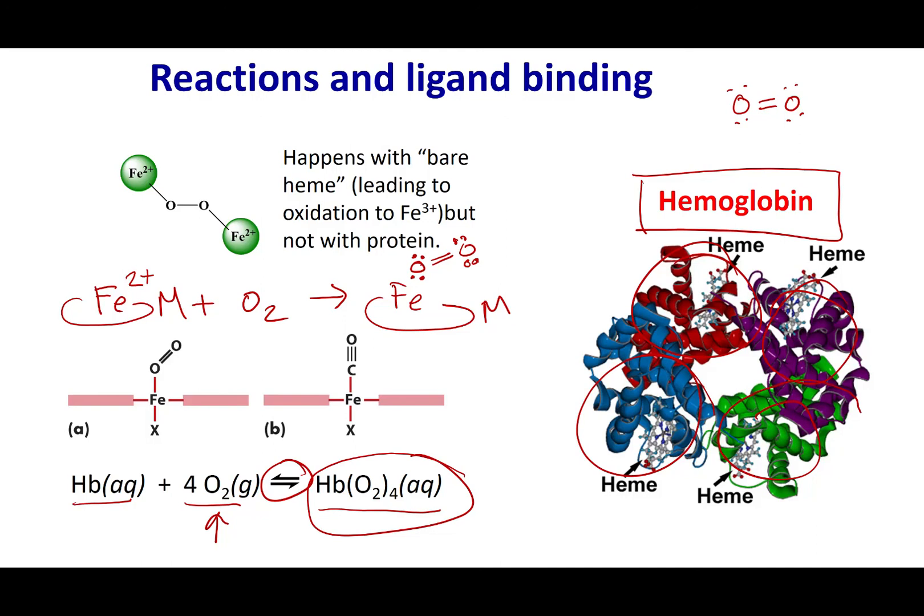Now this oxyhemoglobin is going to travel around your body and go to places like the end of your capillaries where there's not a lot of oxygen. And if there's not a lot of oxygen, well the equilibrium goes back the other way and it releases those O2 molecules so that your body can metabolize them.